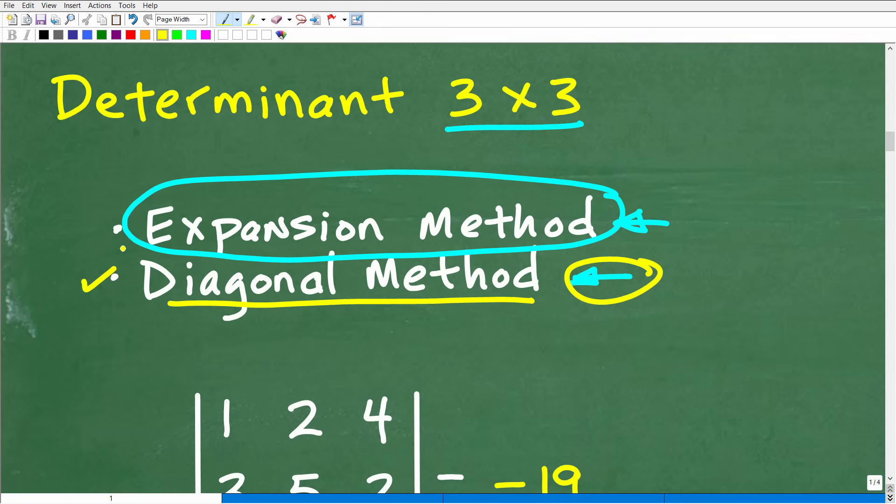I'm going to show you the diagonal method. If you need help with matrices, inverse matrices, Cramer's rule, determinants, all this kind of stuff, definitely check out my algebra two course or my pre-calculus course. I get into all this stuff including the expansion method. The expansion method is a little more involved than the diagonal method. But the diagonal method is such a direct, clean, straightforward method. If you need help with any of these methods, check out those respective courses at my math help program.